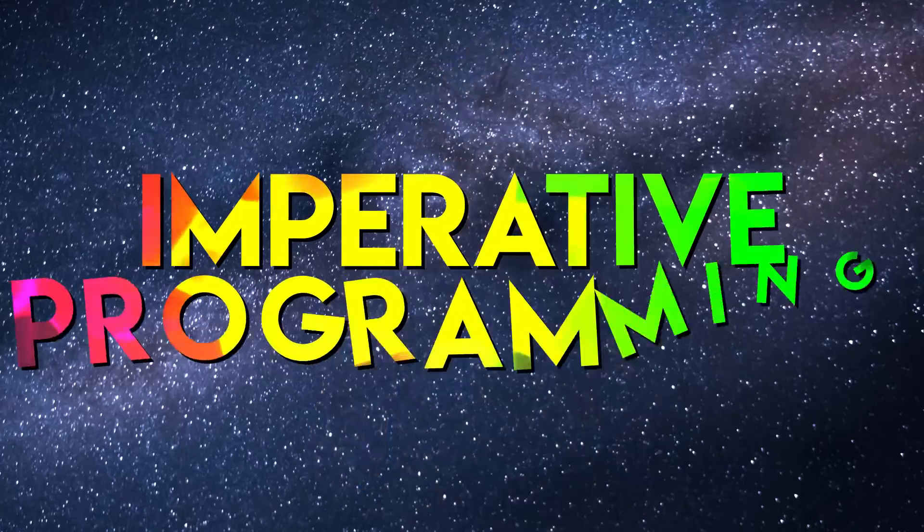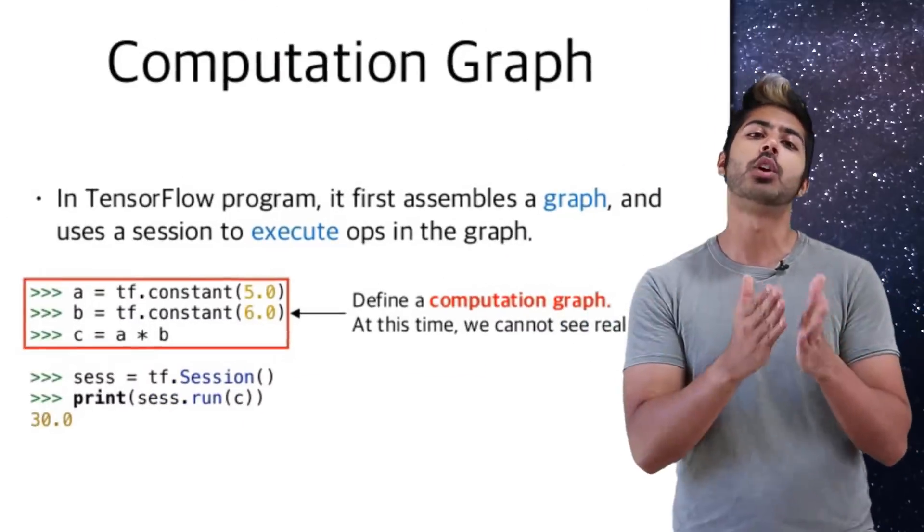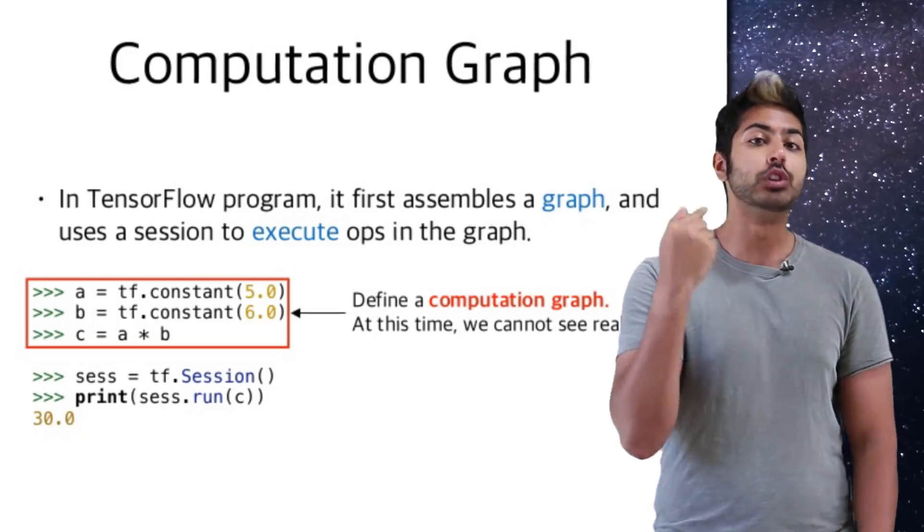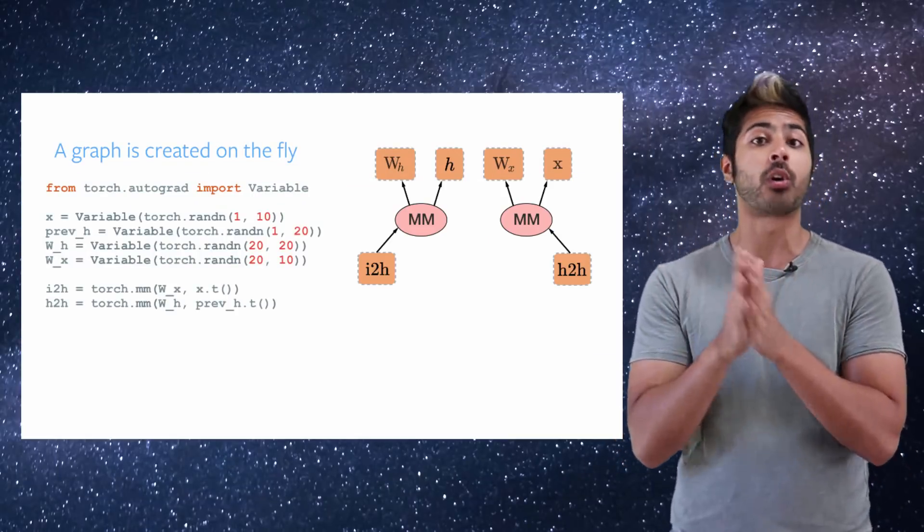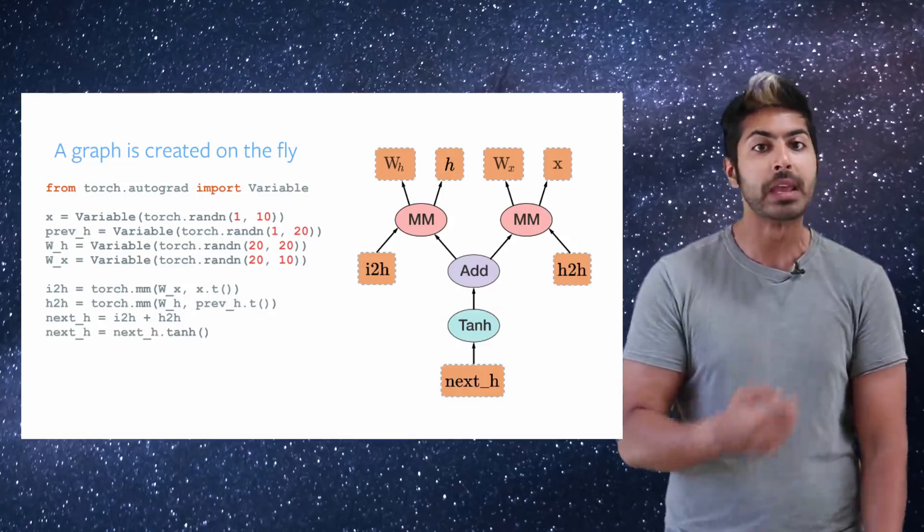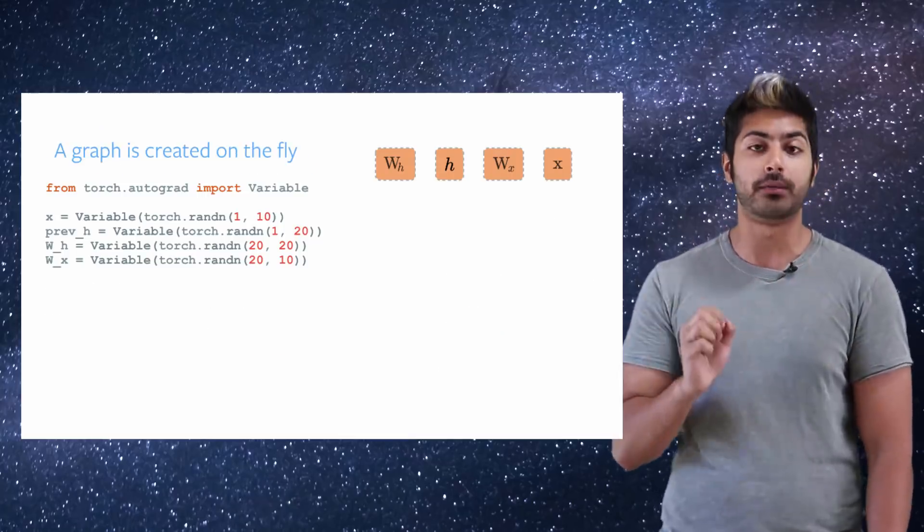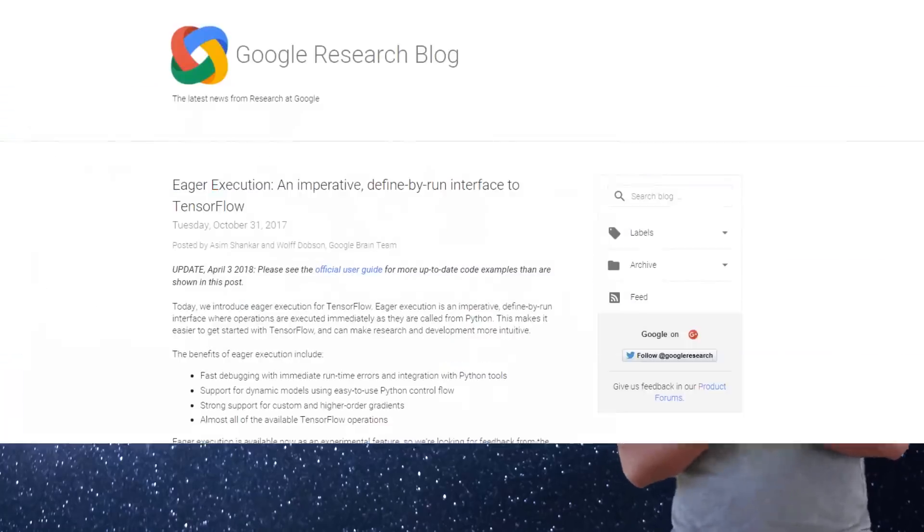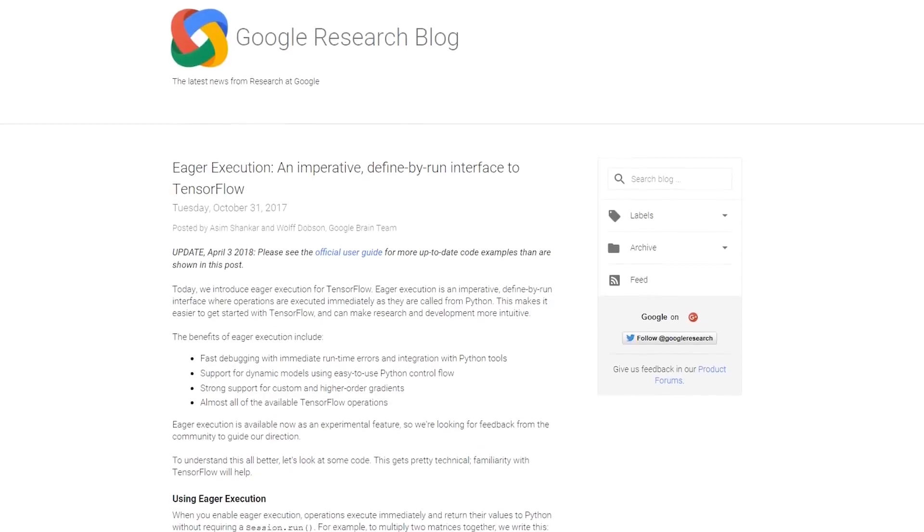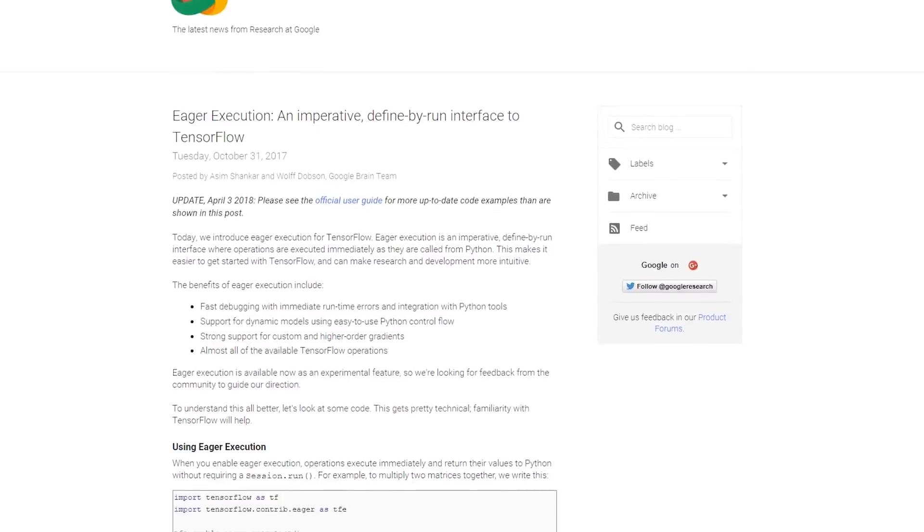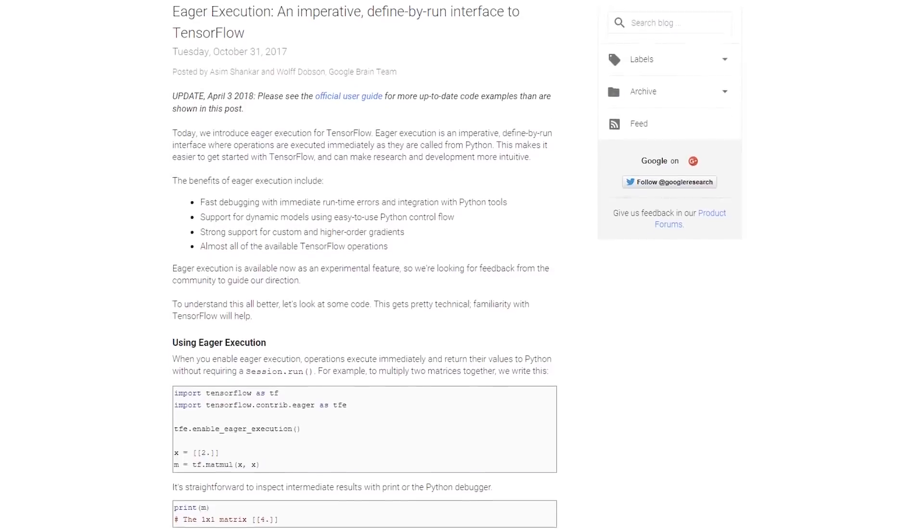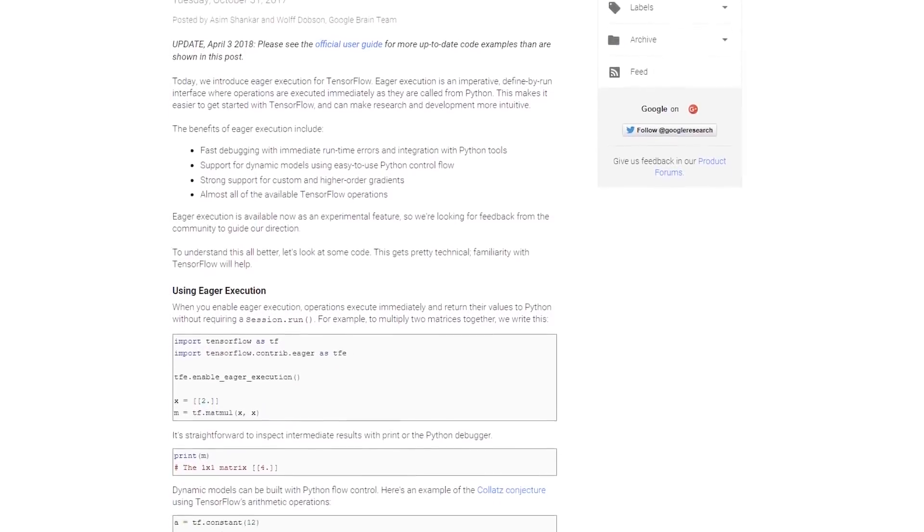One problem with TensorFlow though was that it was missing a crucial feature that AI developers wanted: imperative programming. What that means is TensorFlow offers a define and run framework where you define a computation graph then run it. But newer AI models especially variants of recurrent networks change in size while training, they aren't static. So a define then run framework is needed, which is a gap that the popular PyTorch library built by Facebook filled. But even then TensorFlow recently implemented eager execution that gave it that capability as well. In addition to all of these tools, there are helper libraries built on TensorFlow for a variety of application specific use cases from genomics to music generation.